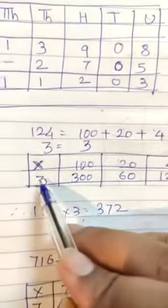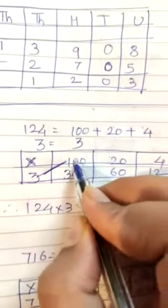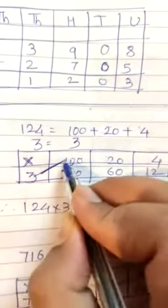Now as I told, zero's count. You have to do the multiplication like this. This multiplication you have to do first. 3 and 100. How many zeros? 2 zeros. 3 ones are 3.